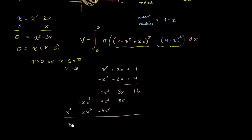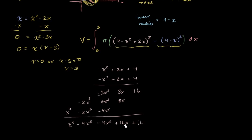We get x to the fourth, minus 4x to the third. And then some terms cancel, but we still have minus 4x squared. Adding the 8x terms gives plus 16x. And then plus 16. So that's this expression expanded out.